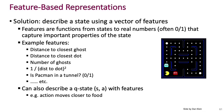And so our solution is going to be to try and describe a state, represent a state using a vector of features. And those features could be, for example, the distance to the closest ghost, the closest monster, the distance to the closest dot, the food, the number of ghosts, and so on and so forth.